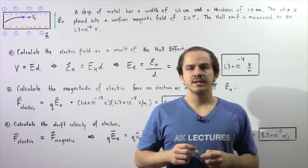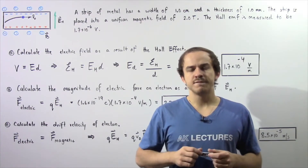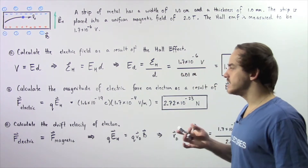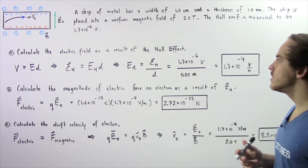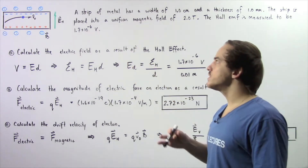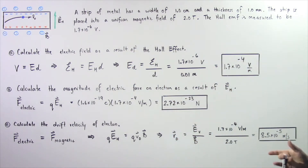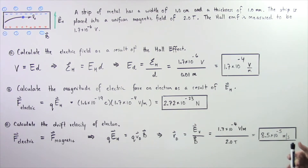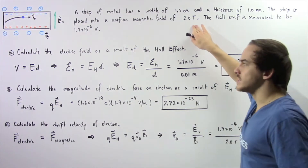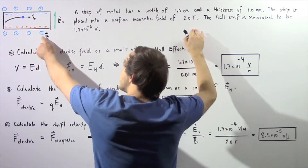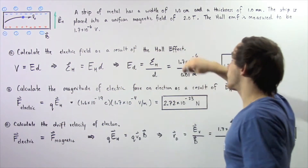In the previous lecture we discussed the Hall Effect and Hall EMF. Now let's look at the following example that will deal with the Hall Effect. Suppose a strip of metal has a width of one centimeter and a thickness of one millimeter. The strip is placed into a uniform magnetic field of two teslas, and our magnetic field points out of the board as shown in the following diagram.